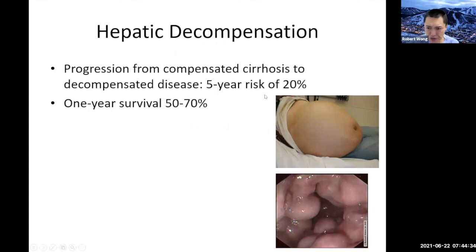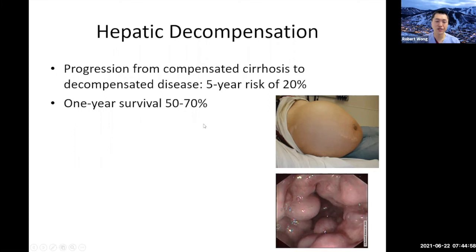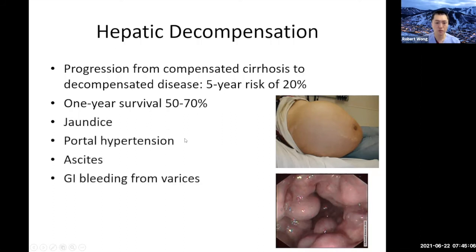Hepatic decompensation — this picture shows someone with massive ascites and an endoscopy picture showing large esophageal varices. Once someone develops cirrhosis, the development of decompensated disease is quite high — the five-year risk is about 20 to 30%. Once someone develops decompensated disease, the mortality risk is quite high; one-year survival is about 50 to 70%. Signs we look for include jaundice, scleral icterus, portal hypertension, ascites, and GI bleeding from esophageal varices. All of these go into our assessment of severity of disease when we initially evaluate patients with chronic hepatitis B.